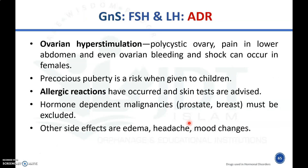Adverse drug reactions (ADRs) of gonadotropin preparations include ovarian hyperstimulation, with chances of polycystic ovary, pain in the lower abdomen, ovarian bleeding, and shock in females. Precocious puberty is a risk when given to children. Allergic reactions may occur, and skin tests are advised before using FSH and LH preparations. Hormone-dependent malignancies like prostate and breast cancer may occur due to excess FSH and LH use.